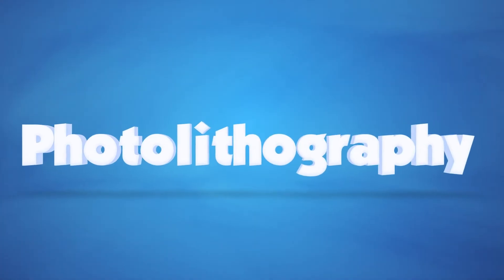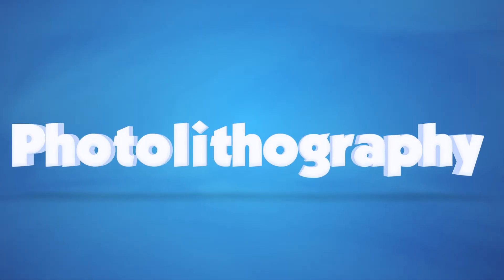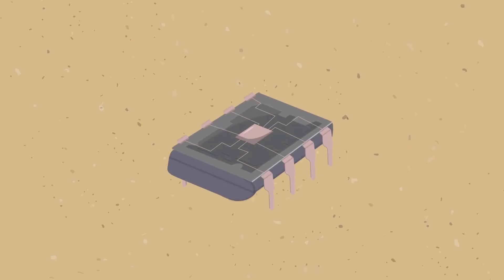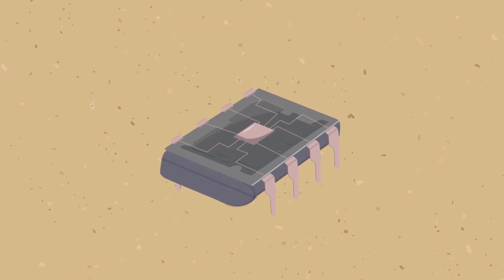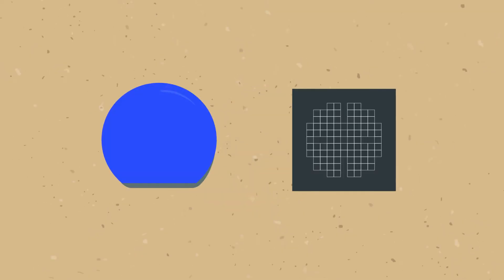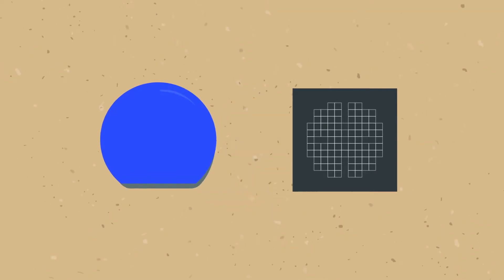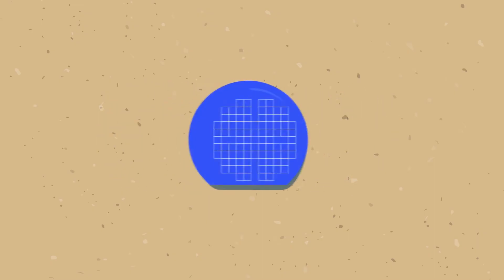Photolithography is a fundamental process employed in the fabrication of chips or integrated circuits. It involves transferring a pattern from a mask onto the surface of a wafer to create distinct layers of the chip.